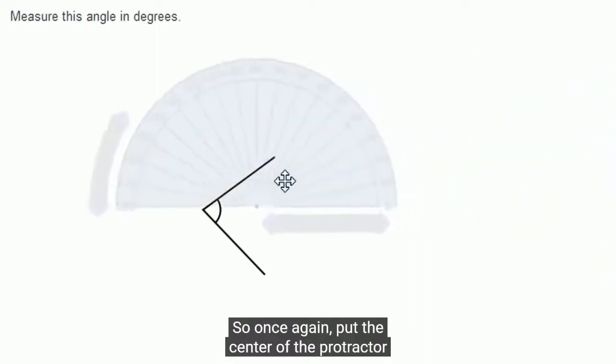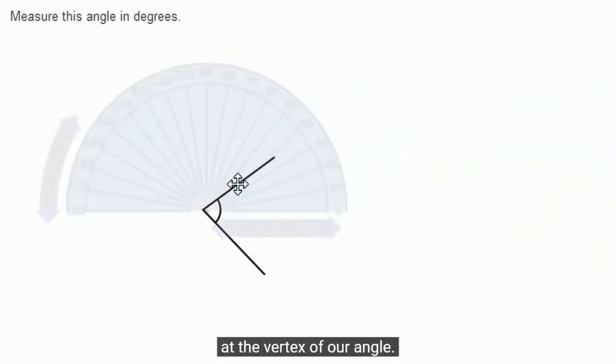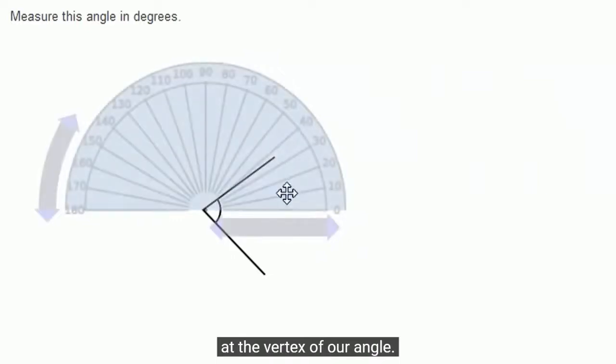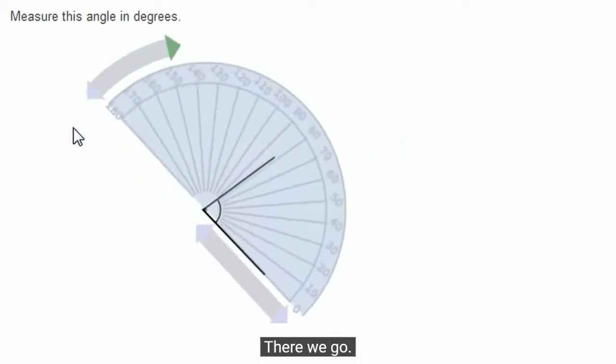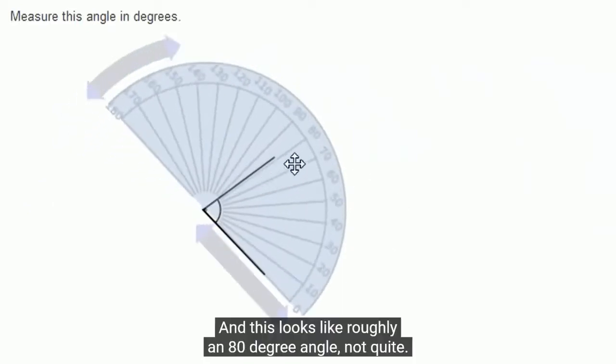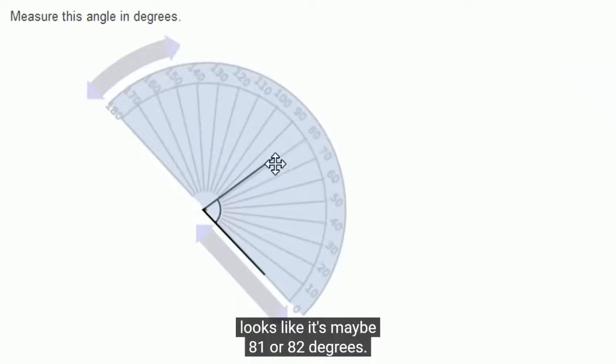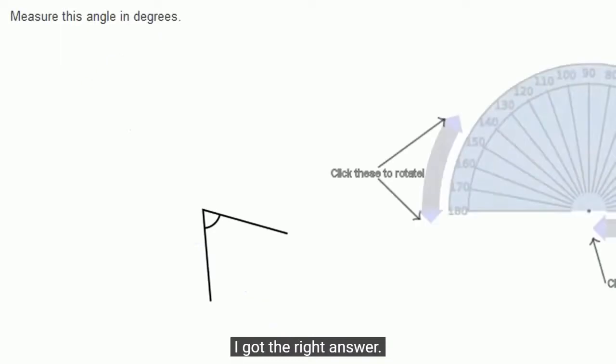So once again, put the center of the protractor at the vertex of our angle. And now I want to rotate it. And this looks like roughly an 80 degree angle. Not quite. If I had to be really precise, it looks like it's maybe 81 or 82 degrees. But I'll just go with 80 as my best guess. I got the right answer. Let's do one more of these.